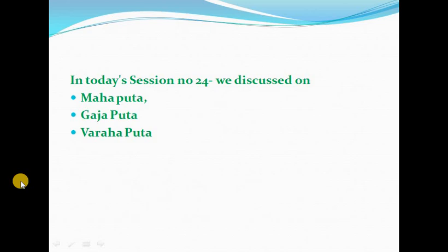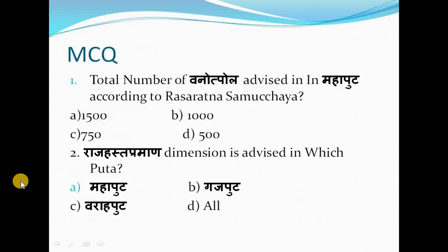In today's session number 24, we discussed Mahaputa, Gajaputa, and Barahaputa. Multiple choice questions related to today's topic: The total number of Vanyapala advised in Mahaputa according to Rasaratna Samuchaya is: (a) 1500, (b) 1750, or (c) 500? Rajahasta pramana dimension is advised in which puta: Mahaputa, Gajaputa, Barahaputa, or all?